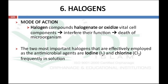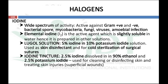The next group is halogens. Halogen compounds halogenate or oxidize vital cellular components, thereby interfering with their functions and leading to death of the microorganism. The most important halogens used as antimicrobial agents are iodine and chlorine. Iodine is a wide-spectrum disinfectant active against gram-positive and gram-negative bacteria, bacterial spores, mycobacteria, fungi, viruses, and amoebae. The major active agent is elemental iodine (I₂), but since I₂ is slightly soluble in water it is prepared in other solution forms like Lugol's iodine and iodine tincture.